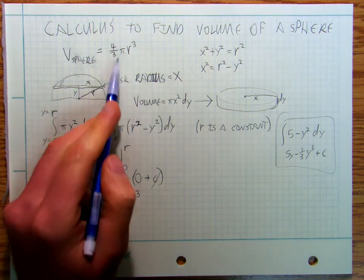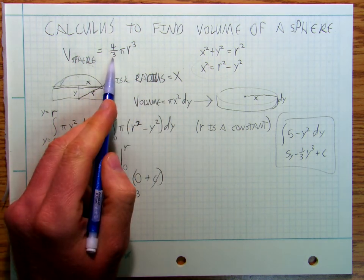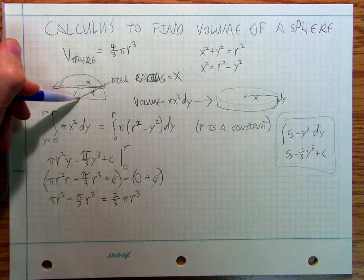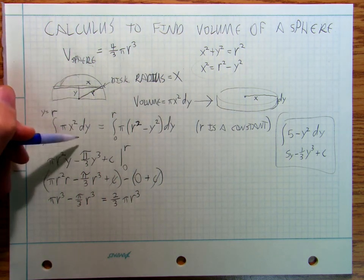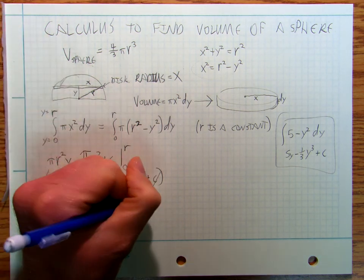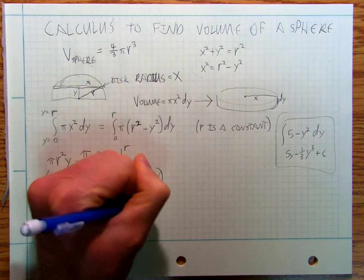But wait a second, we said that the sphere was four thirds pi r cubed. Ah, but remember, we started at zero and went to r, instead of going from negative r to positive r, so we only did for half of the sphere, so that's a hemisphere.